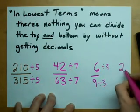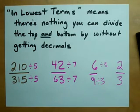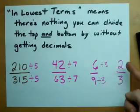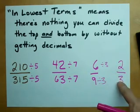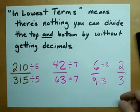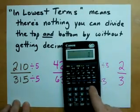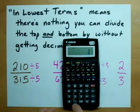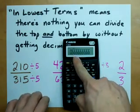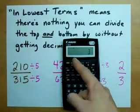6 divided by 3 gives 2, and 9 divided by 3 gives 3 — so we get 2 over 3. Now there's nothing I can divide both of these by without going into decimals. I can't divide by 2: I'd get 1 and 1.5, and 1.5 is no good. I can't divide by 3: 2 divided by 3 is 0.66, which is no good either. So 2 over 3 is the lowest you can get. 210 divided by 315 is 0.6666... and 2 divided by 3 gives the same decimal — they're equivalent.